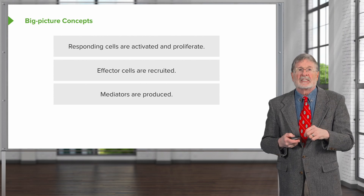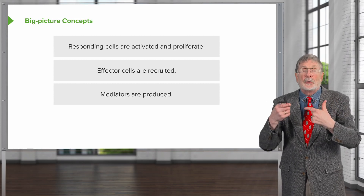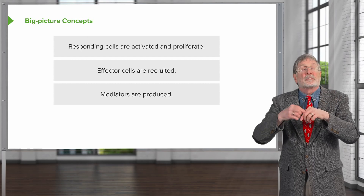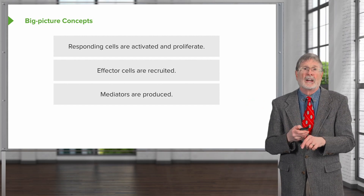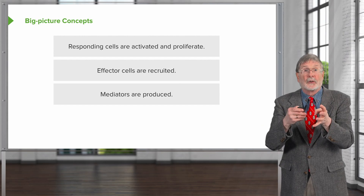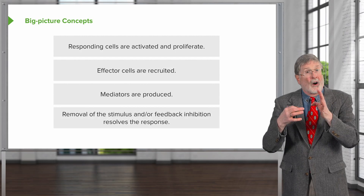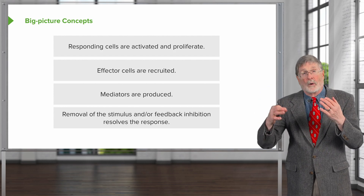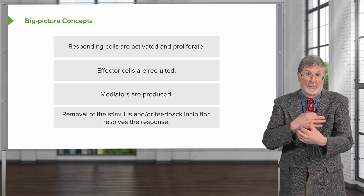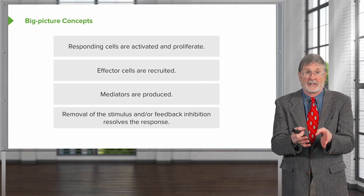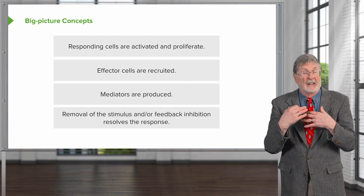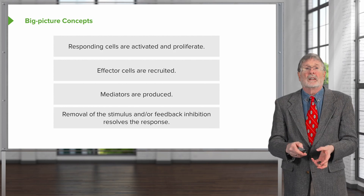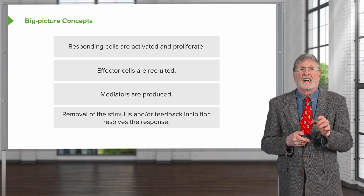There are going to be a number of mediators produced, so it's not just killing — there are various agents that are secreted into the environment. Those mediators are going to be produced, and they will potentially have good things to do, but could also be pathogenic. And eventually, hopefully, our immune system is successful, we remove the stimulus, and we establish feedback inhibition to turn the whole system off, and the response resolves. If we don't carefully regulate those steps, we just fight and fight, which can lead to scarring, more tissue damage, et cetera. So those are the big overarching concepts.